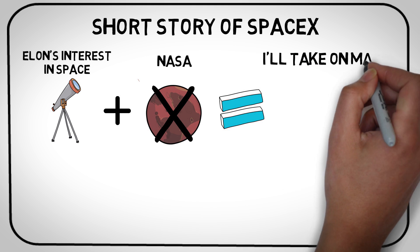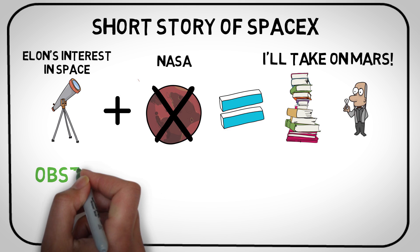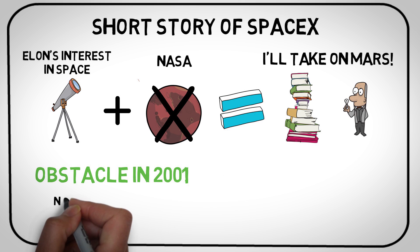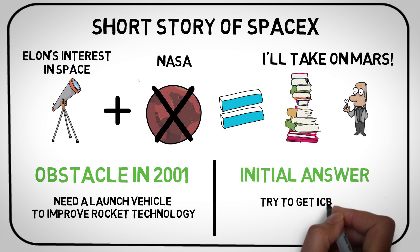To get past the first obstacle, Elon met with experts and educated himself with books. As an action step for his primary obstacle, Elon believed that he needed to go to Russia to find an ICBM to use as his launch vehicle. And this is what he actually did. But he wasn't taken seriously.